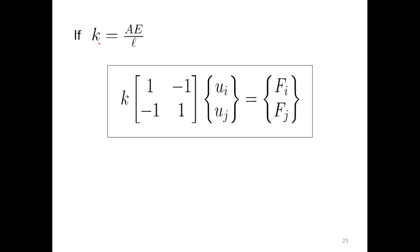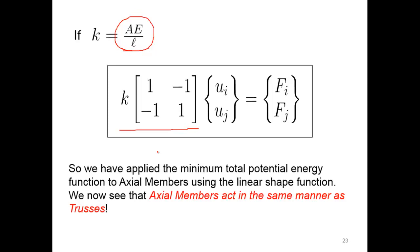Substituting those equations together into the total minimum potential energy equation in matrix form, if we set k equal to AE/L (the spring or stiffness constant), then our stiffness equation becomes k times the matrix [1, -1; -1, 1] times the displacement column {ui, uj} equals the force column {Fi, Fj}. We applied minimum total potential energy to axial members and found they act in the same manner as trusses — which makes sense since axial members are two-force members, just like trusses were — so we end up with the same results.